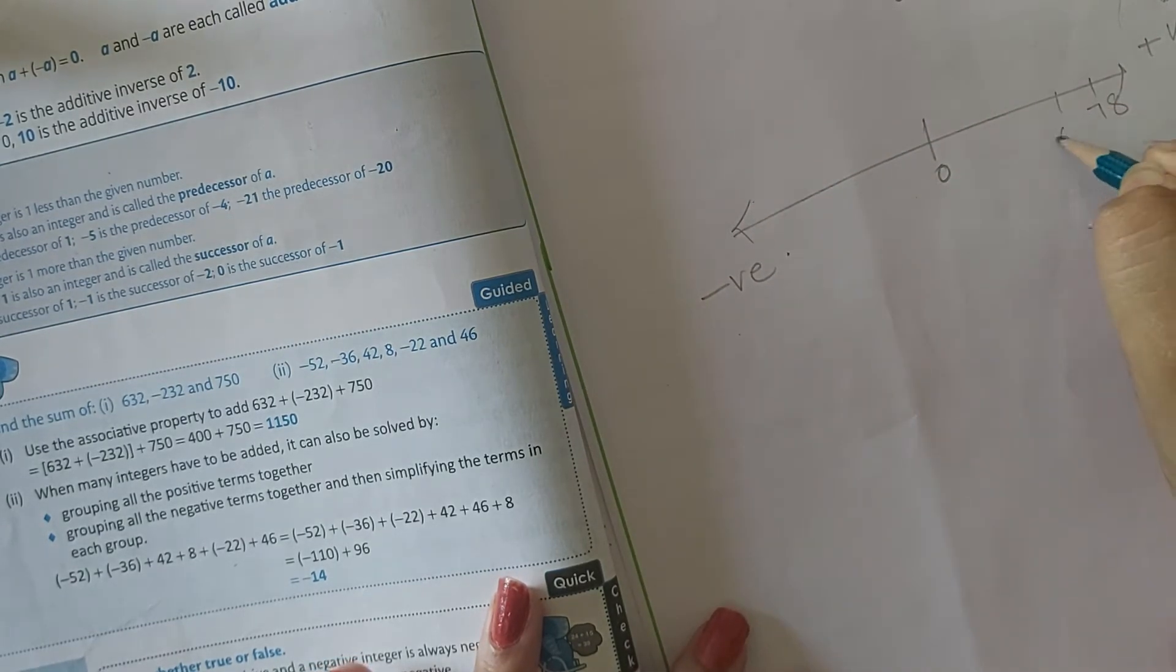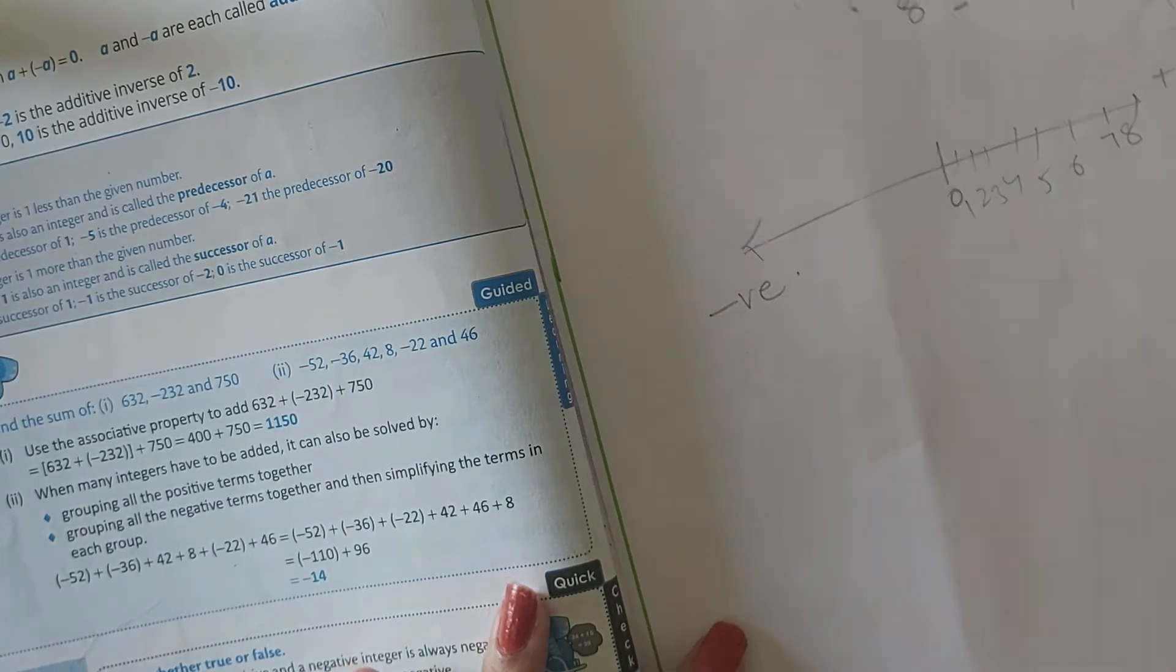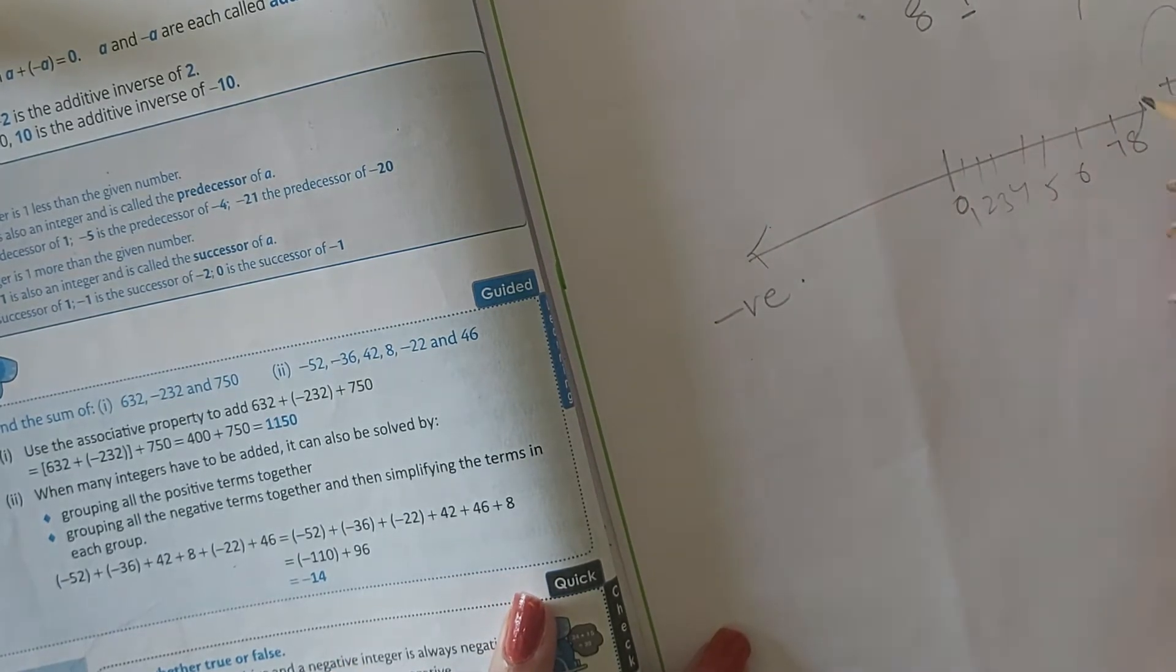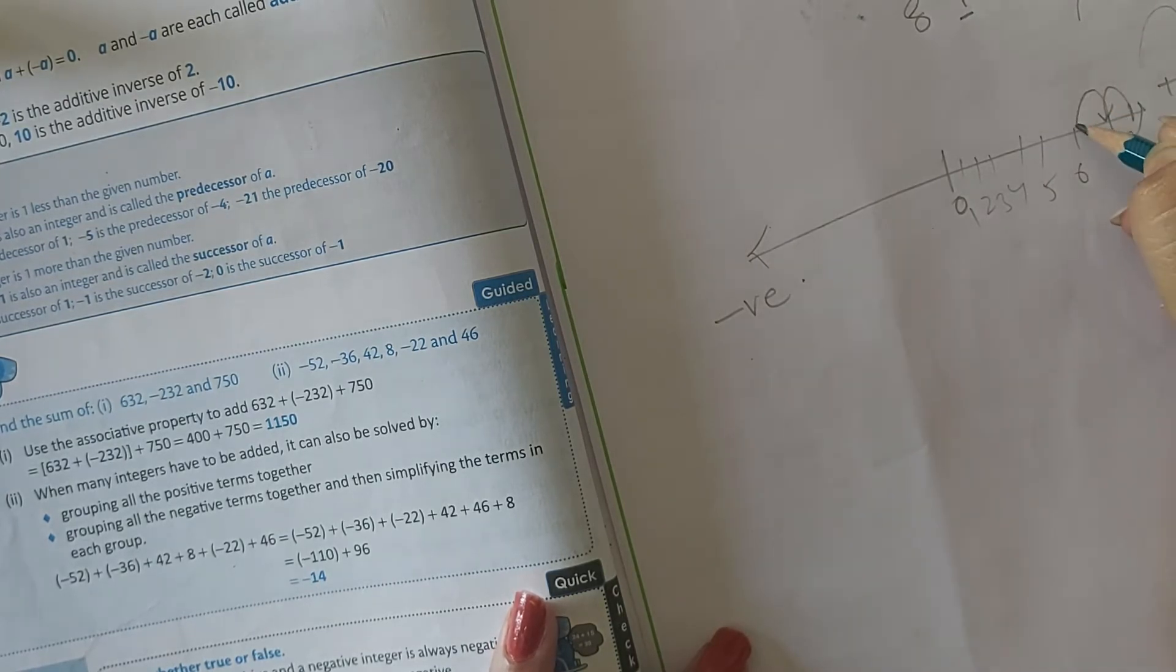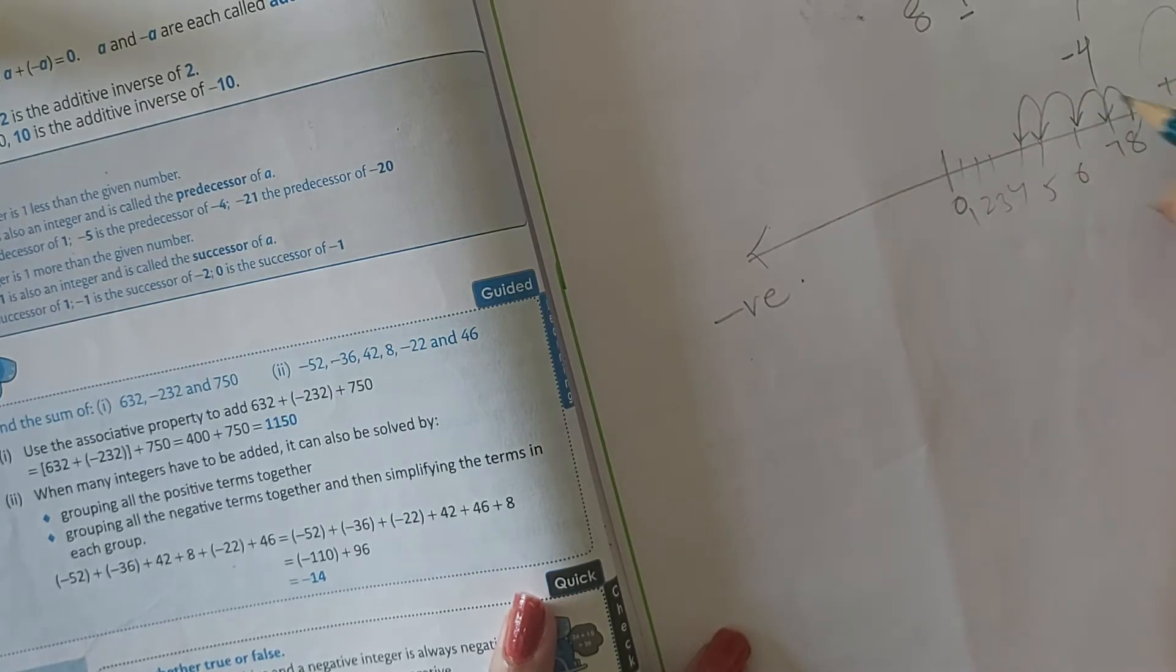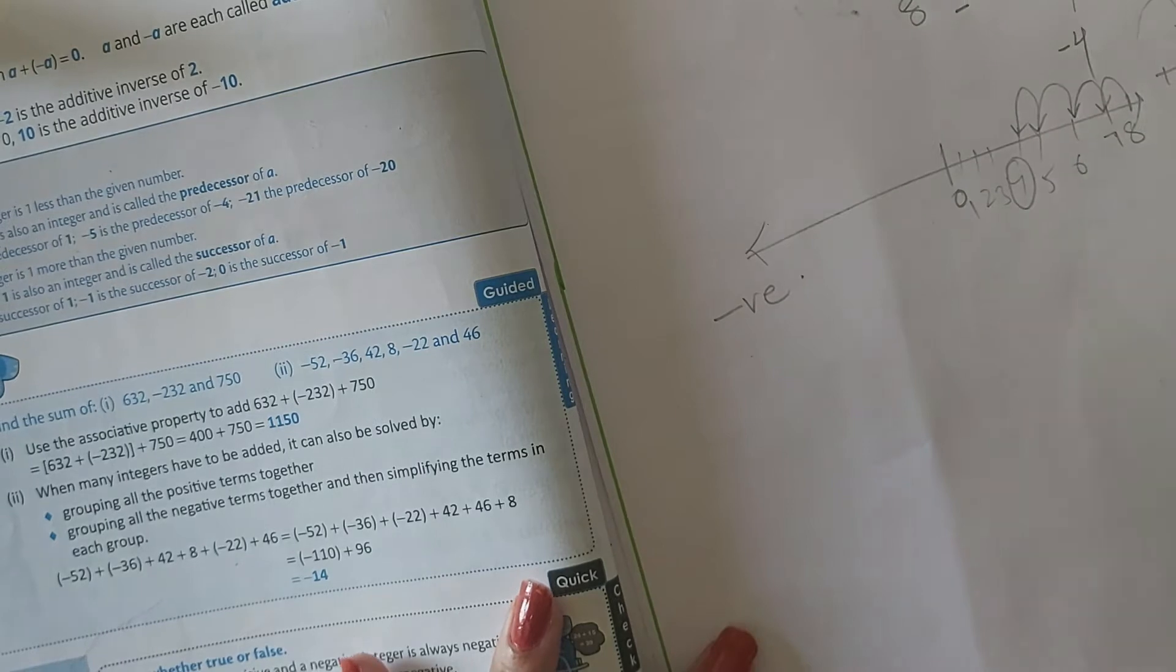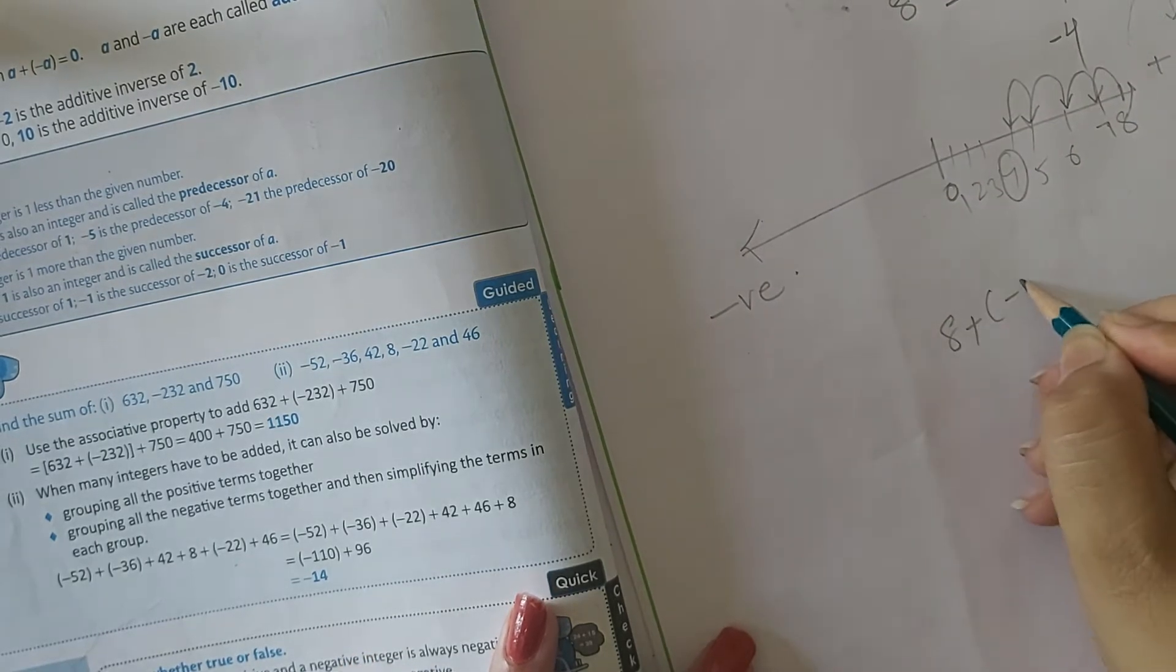So here it is 8, 7, 6, 5, 4, 3, 2, 1. So now that is 8 minus 4. 8 is here. Moving 4 steps backward: 1, 2, 3, and 4 means 8 minus 4. What is the answer? That is 4. So simply write 8 minus 4 equals 4.